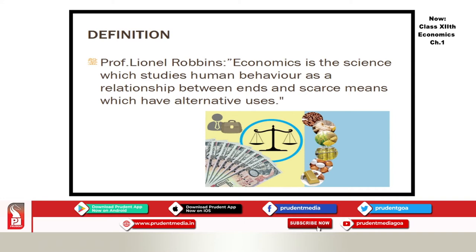According to Professor Lionel Robbins, economics is the science which studies human behavior as a relationship between ends and scarce means which have alternative uses. Human behavior — how do we behave with respect to unlimited needs, unlimited wants, and limited resources? And these resources have alternative uses.